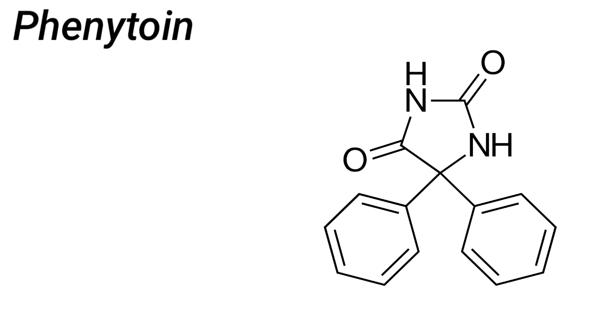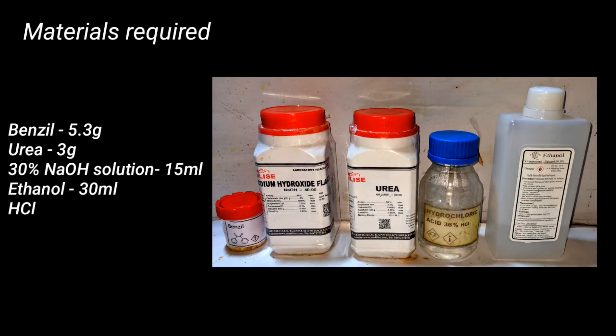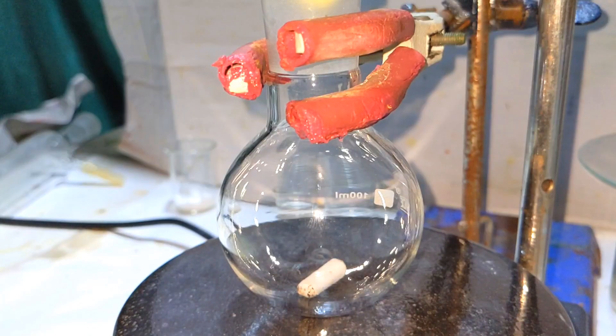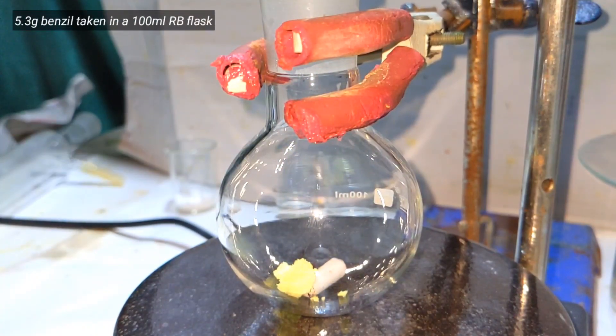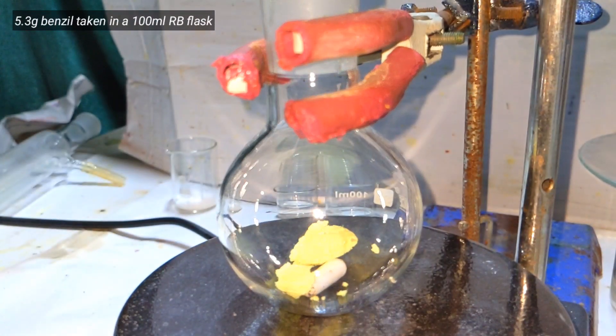Phenytoin has been long used as an anti-seizure medication. Materials required for this preparation include 5.3 grams of benzyl, 3 grams of urea, 15 milliliters of 30% sodium hydroxide solution, 30 milliliters of ethanol, and hydrochloric acid to make the solution acidic. A 100 milliliter round bottom flask with a stirring bar was attached on a clamp.